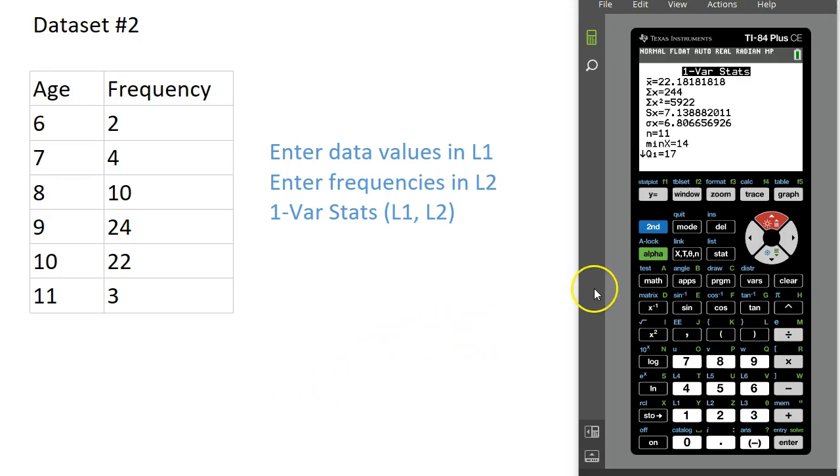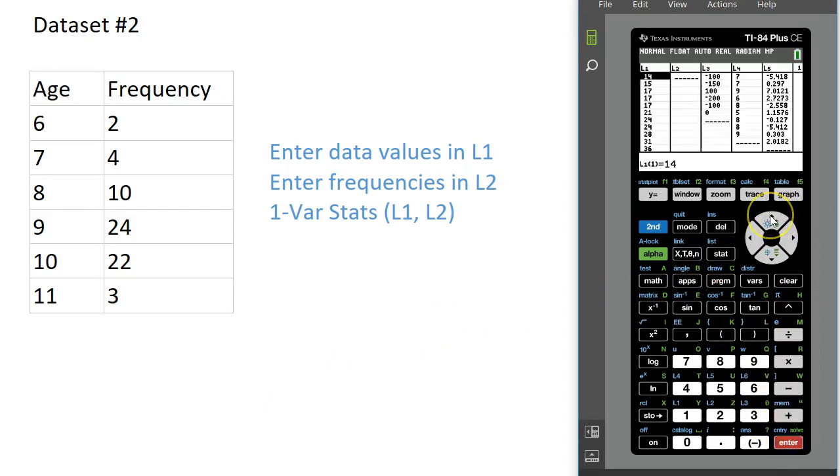We're going to press Stat again and Edit. We want to clear out what we have in List 1. I'm going to go up to the column heading, press the Clear button, and then scoop back down. Notice that clears out my first list.